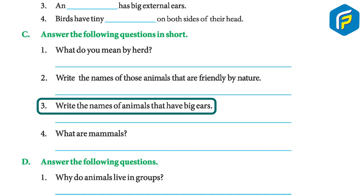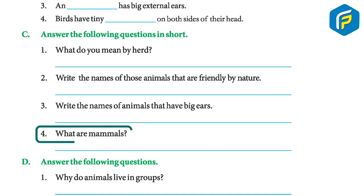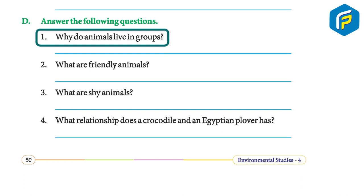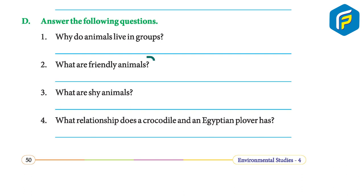Animals with big ears include donkeys, rabbits, and giraffes. Mammals are animals that have external ears and body hair. Animals live in groups because they are social by nature — they do so to find food and water, protect themselves from enemies, and bring up their young ones.